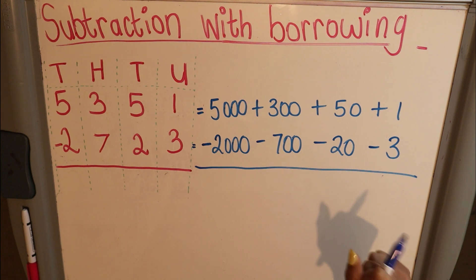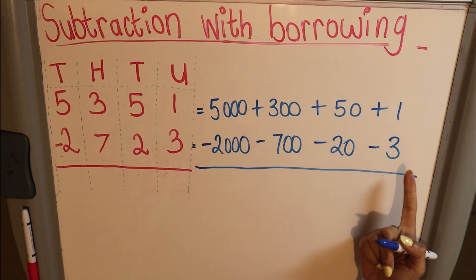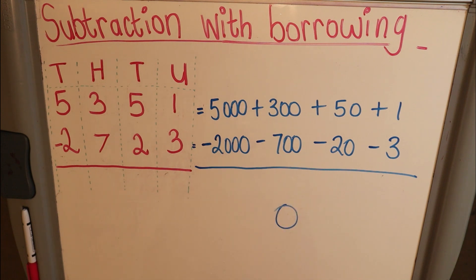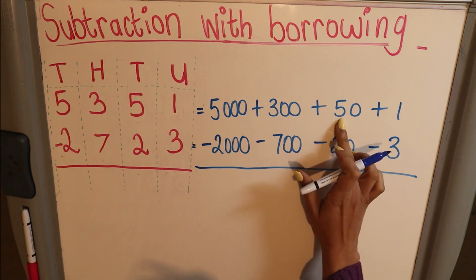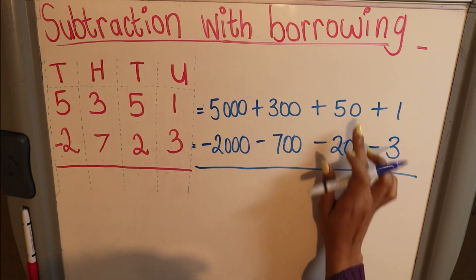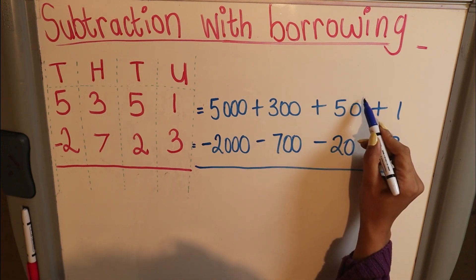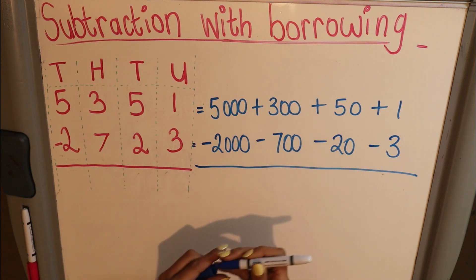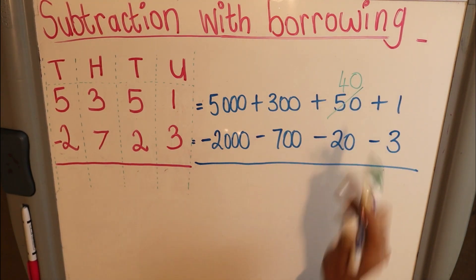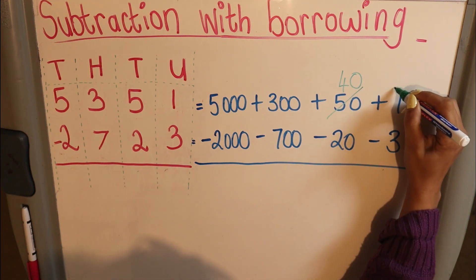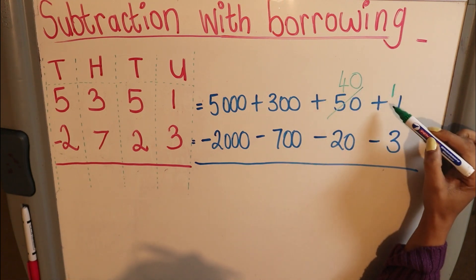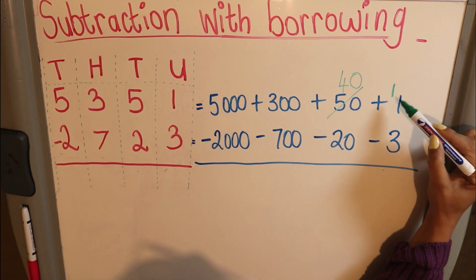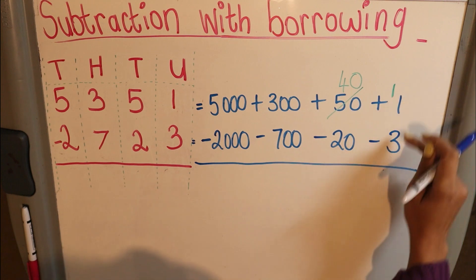The number one rule for subtraction is top minus bottom. When I have one, can I take away three? No — I only have one sweet, I can't take away three, so I need to borrow from my tens column. In the tens column there's fifty, so I borrow one ten, leaving forty there. The one I borrowed I place over here, making the units column eleven — because ten plus one is eleven. Eleven minus three is eight.